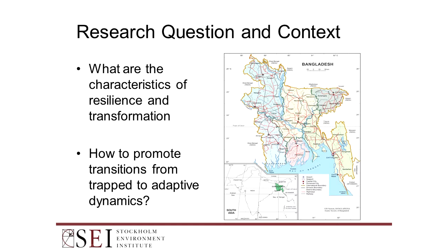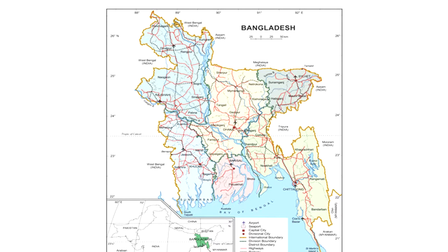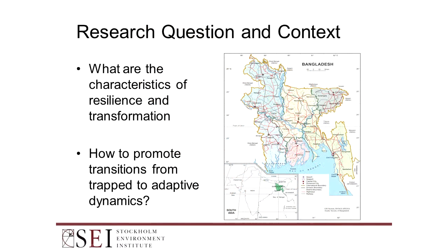It draws on empirical research with communities in two areas located in two adjacent districts in the southwest coastal region of Bangladesh that borders the Sundarbans mangrove forests. We aim to uncover the processes of resilience in individuals and institutions and ask if the changes could be framed in terms of transitions from one phase to the other in the adaptive cycle heuristic, to expose the underlying processes that may lead to adaptive cycle dynamics or to trapped dynamics.